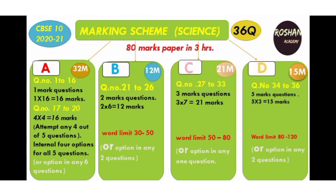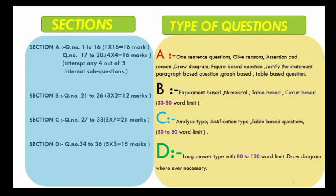Questions 34 to 36 fall under Section D. Section D carries 15 marks — they are long questions of five marks each, so the word limit has increased to 80 to 120 words. An 'or' option comes between any two of the questions from 34 to 36. That was about the marking scheme of the latest CBSE science paper for the year 2020-21.